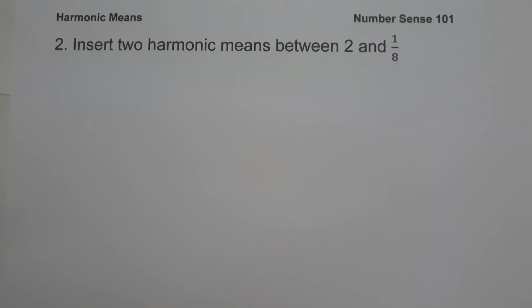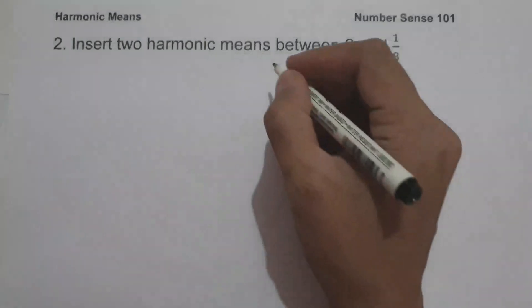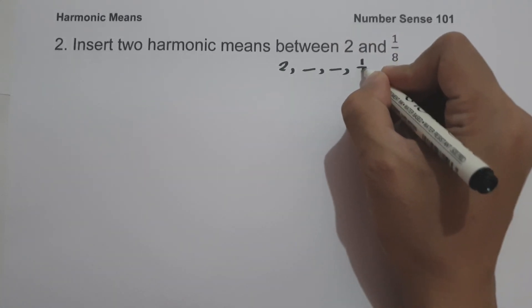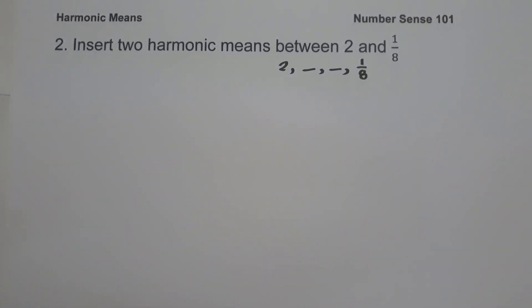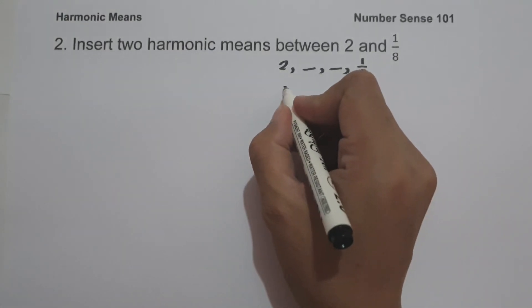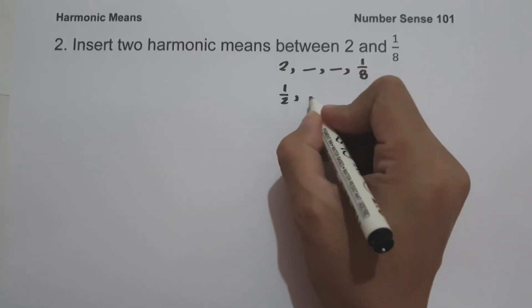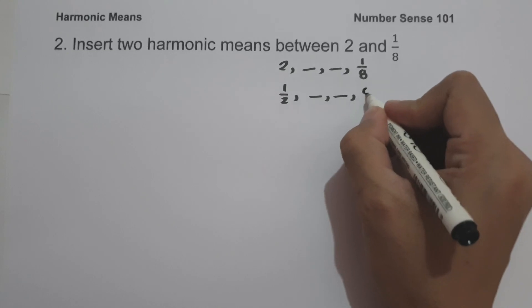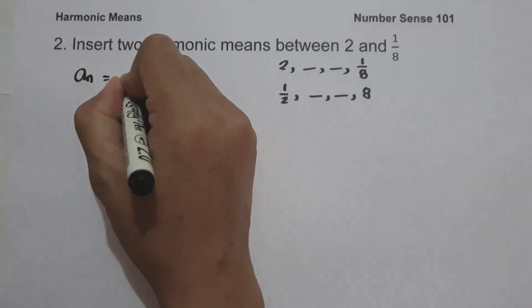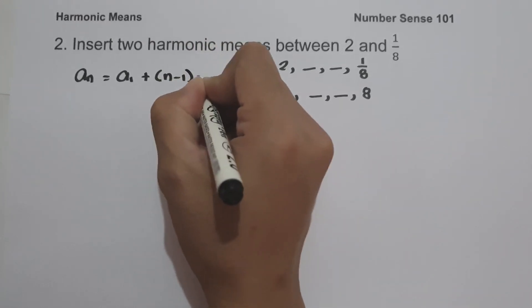On example number 2, insert 2 harmonic means between 2 and one over 8. We illustrate: 2, then two numbers to insert, then one over 8. Since a harmonic sequence is the reciprocal of an arithmetic sequence, let us find the reciprocals of the given terms. The reciprocal of 2 is one half, and the reciprocal of one over 8 is 8. We use the arithmetic sequence formula: a sub n equals a sub 1 plus the quantity n minus 1 times d.